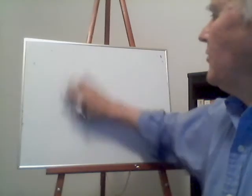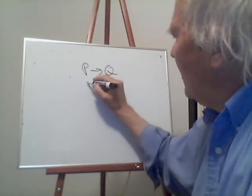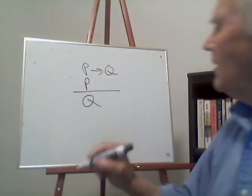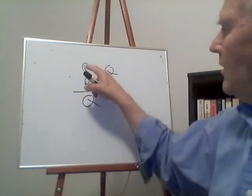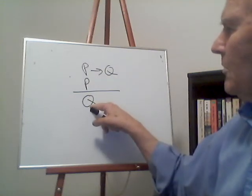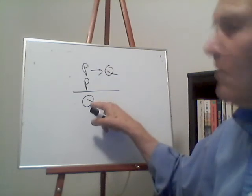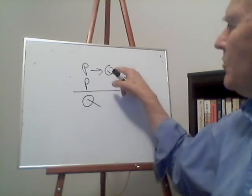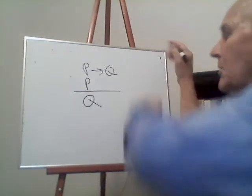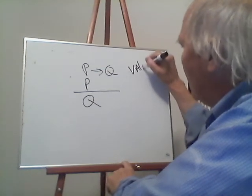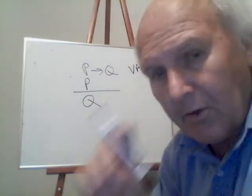Let's take an argument: P arrow Q, P, therefore Q. For example: if it's a cat, then it's an animal — it's a cat, therefore it's an animal. Or: if today is Monday, then we will go to the beach — today is Monday, therefore we will go to the beach. This form of argument is always a valid argument — it's good logic, no matter what you replace P and Q with.